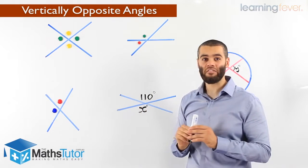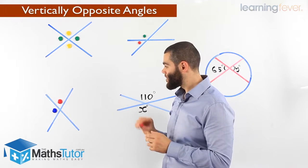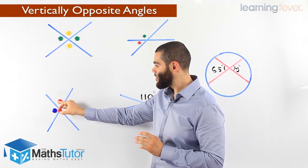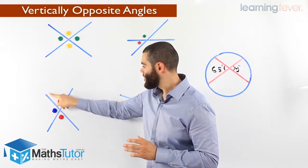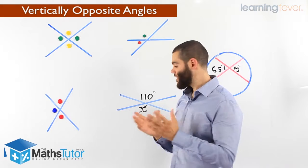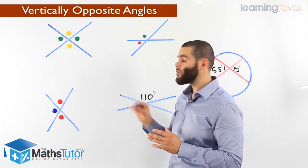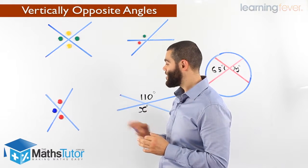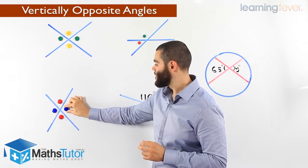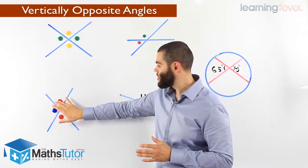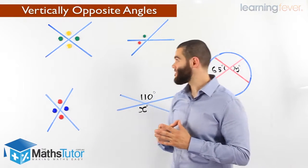Let's try and locate some in this diagram here. Where is the vertically opposite angle to the red? We look — the red is there, and the vertically opposite angle is directly opposite. And there it is. This angle is vertically opposite to that angle there. Then we want to locate where is the vertically opposite angle to the blue. Blue angle there, right opposite is there. So vertically opposite and vertically opposite angles, as you can see.